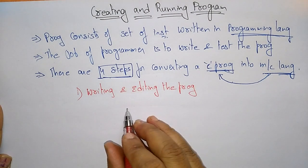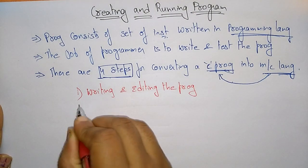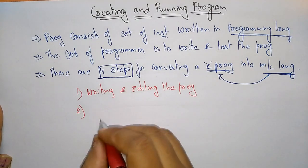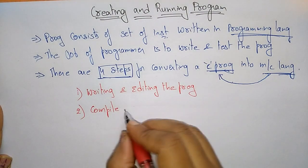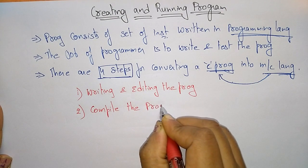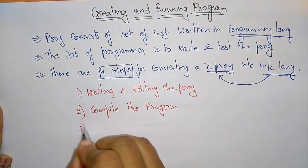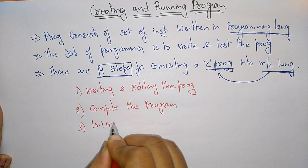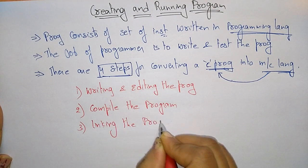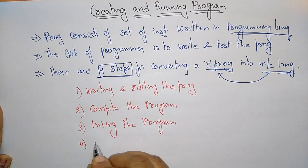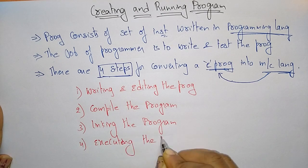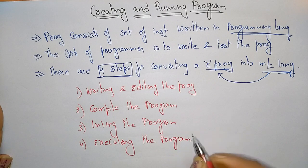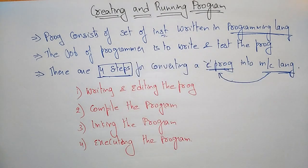First you write and edit the program — that is, creating the program. After that, you compile the program, which means converting the programming language into machine language. Then comes linking the program with library functions. Finally, you execute the program. These are the four steps involved in creating and running a program.